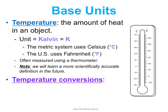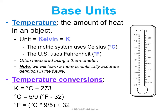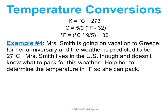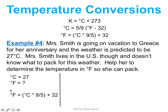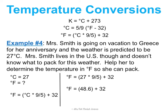You need to be able to convert between Kelvin, Celsius, and Fahrenheit using a couple of equations. For example, Mrs. Smith is going on vacation in Greece and the weather is predicted to be 27 degrees Celsius. She lives in the United States and needs to know the temperature in Fahrenheit to pack. We use the equation with Fahrenheit isolated. Plugging in C = 27, we do 27 times 9/5 first — that's 48.6 — then add 32, giving us 80.6 degrees Fahrenheit. She needs to pack for warm weather.